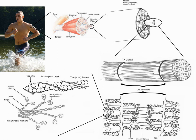Muscle tissue is a soft tissue and is one of the four fundamental types of tissue present in animals. There are three types of muscle tissue recognized in vertebrates. Skeletal muscle or voluntary muscle is anchored by tendons, or by aponeuroses at a few places, to bone and is used to affect skeletal movement such as locomotion and in maintaining posture. Though this postural control is generally maintained as an unconscious reflex, the muscles responsible react to conscious control like non-postural muscles.